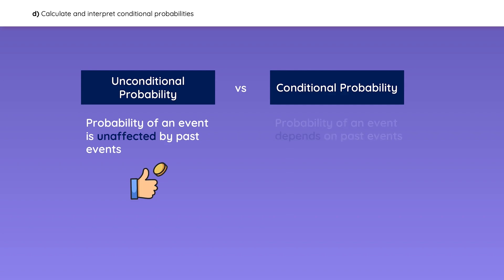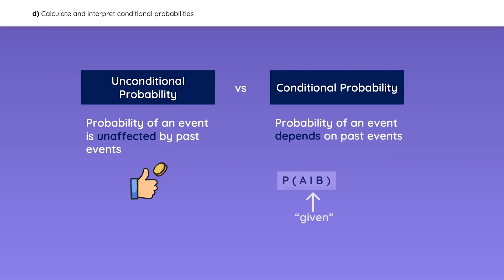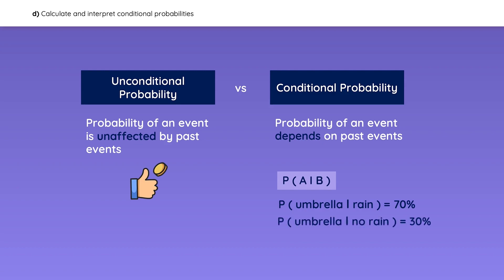On the other hand, conditional probabilities depend on past events. They are written as the probability of A given B. For example, the probability that you bring an umbrella given that it's raining is 70%, or the probability of bringing an umbrella given that it's not raining is 30%. Clearly, the probability of A depends on whether it rains or it doesn't.